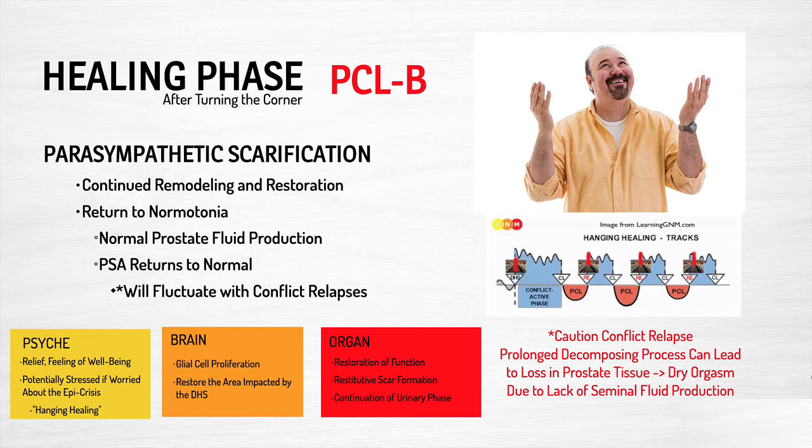On the psyche level, we're feeling well-being and relief. It's important to know about the five biological laws and understand the two phases, because sometimes people get stressed and worried during the epileptoid crisis — an event where you're just not feeling good. If you tend to get scared when you're not aware of what symptoms mean, this could cause a conflict relapse. On the brain level, the brain area that was impacted is being healed and restored. On the organ level, everything is returning to normal function.